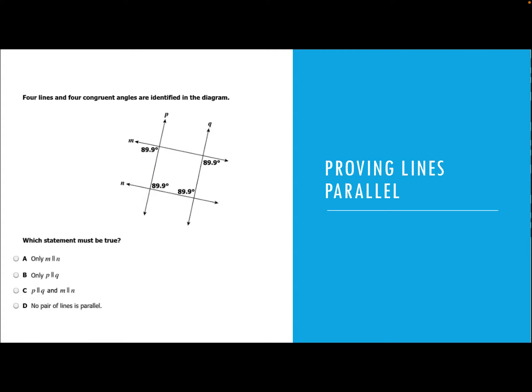Next, we have a diagram with four lines and four congruent angles, and we have to figure out which statements are true. Is it true that only M is parallel to N? Looking at line M and line N, line P acts as a transversal. The alternate interior angles formed are congruent, so M is parallel to line N. That symbol means parallel, so M parallel to N is a true statement.